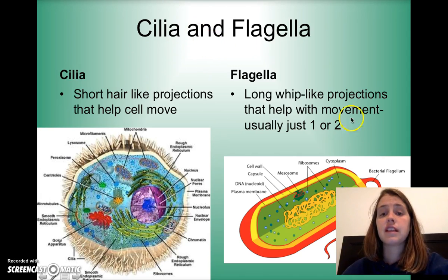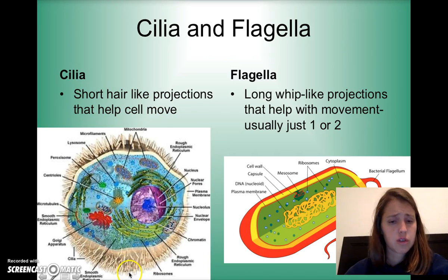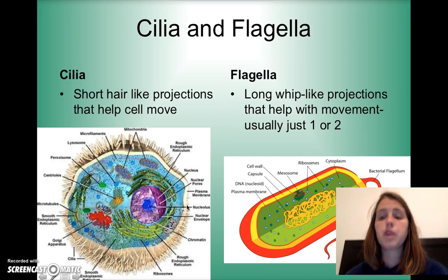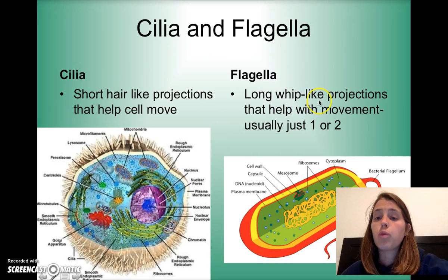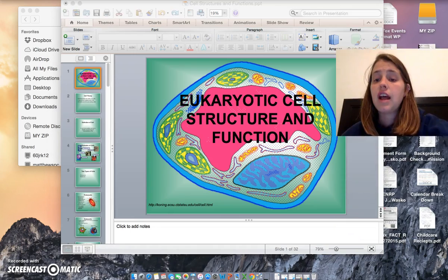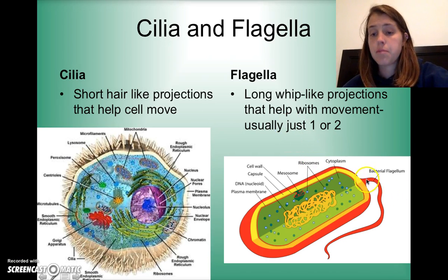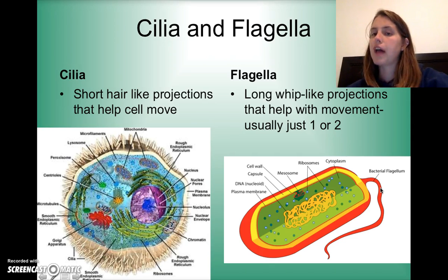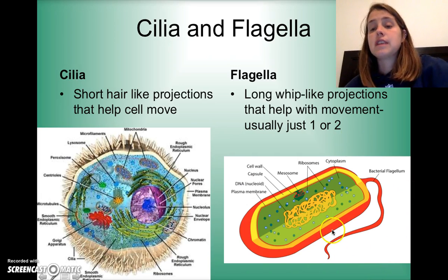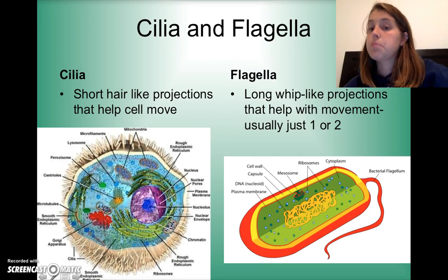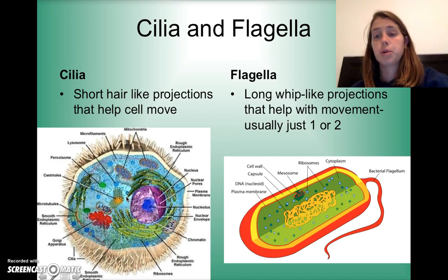Finally, we have cilia and flagella. Cilia are short hair-like projections that help cells move — you can see the tiny hairs off this cell — and they move by waving almost like little paddles. The flagella is a long whip-like projection that allows movement, usually one or two per cell, swinging like a propeller blade. Flagella is more common in single-celled organisms, while cilia is more common in multicellular organisms, though examples of both can be found in each.